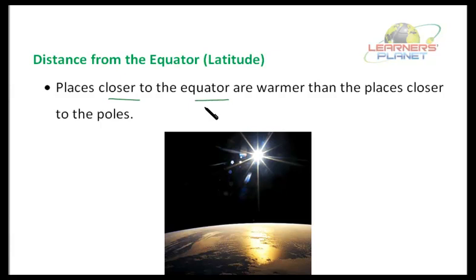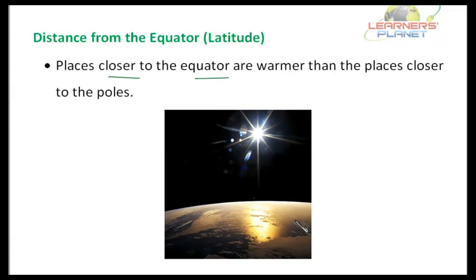Remember always that the Earth's climate is extremely complex. This is the picture of the sun's rays falling on Earth. Places at higher latitude are not always colder than places at lower latitude, because the sun's rays fall directly on the equator and at an angle on the poles. Similarly, wind and ocean currents also play a role in determining the climate of a place. So distance from the equator, shortly termed as latitude, is one such factor that depicts the climate of the place.